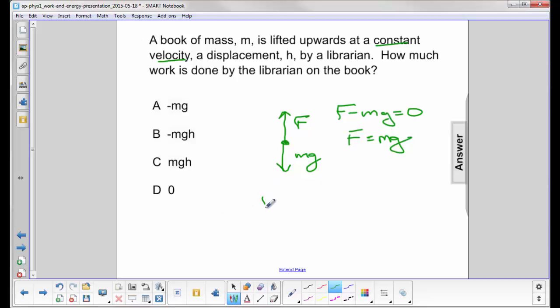And now we go to the work equation, which is work equals force times displacement in the parallel direction, the same direction as the force. Well, in this case, the force is going up. It's going up a displacement of h. So the work done is mgh.